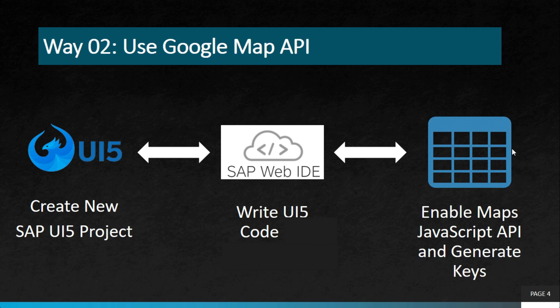The second way of integration is using the Google Maps API. For this you also need a UI application and you'll write code for integration. You need a JavaScript-based API, which you generate using Google Maps. It is a paid service, so you need to first add your billing account — add your credit card or debit card to Google. Then you create a key, enable it for JavaScript API use, and then it will work.